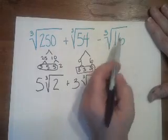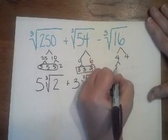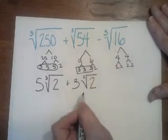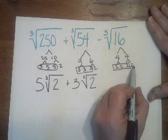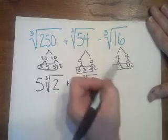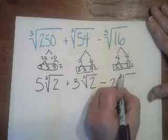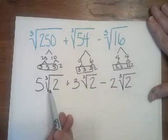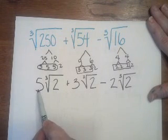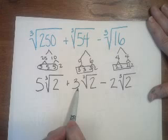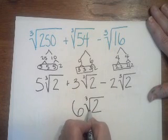Here's the last one, 16. 16 is 4 times 4. Both of those can be broken down to 2 times 2. Well, I have 3 twos. Those can come out. And even though the 4th one is still a 2, it has to hang back. It needs 2 more buddies to get out. So we can take the 2 out. So it's minus 2 times the cube root of 2. And look, once again, I have like radicals. All of them are cube roots of 2. So we have 5 plus 3, which is 8, and 8 minus 2 is 6. 6 cube roots of 2.